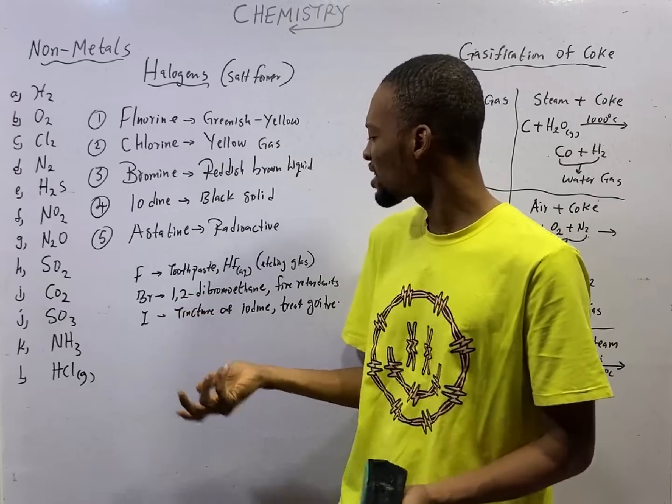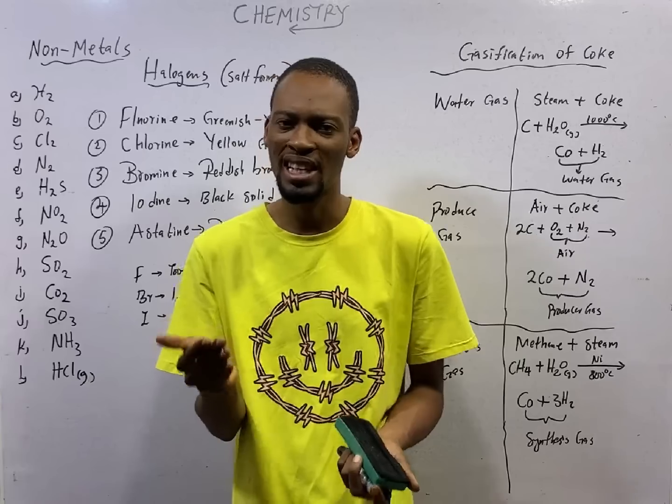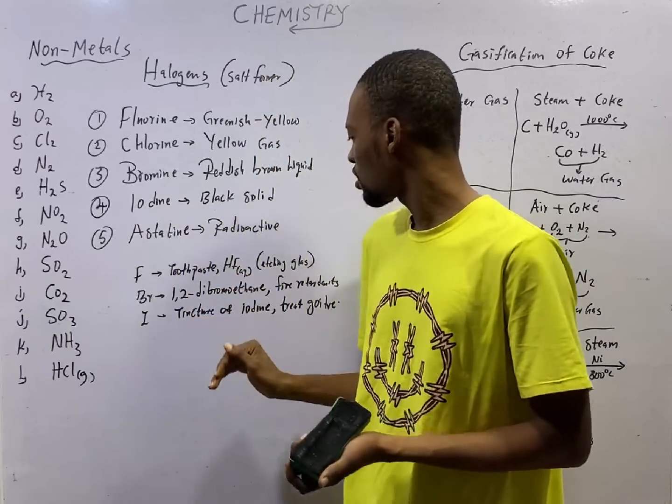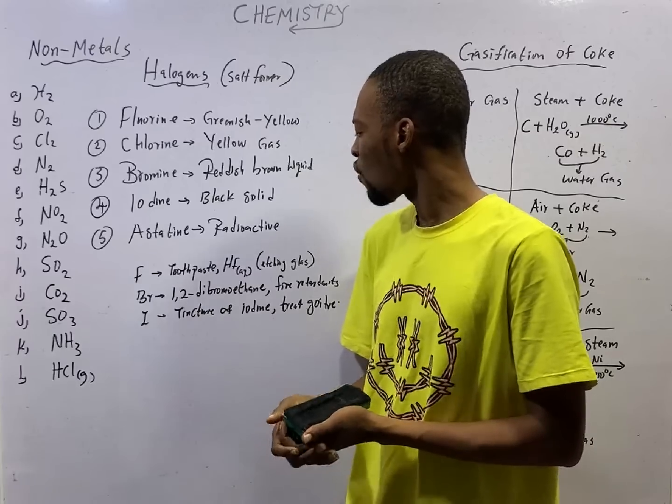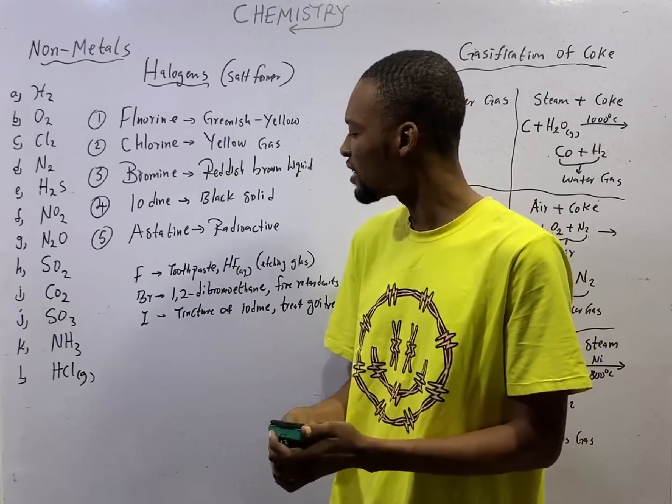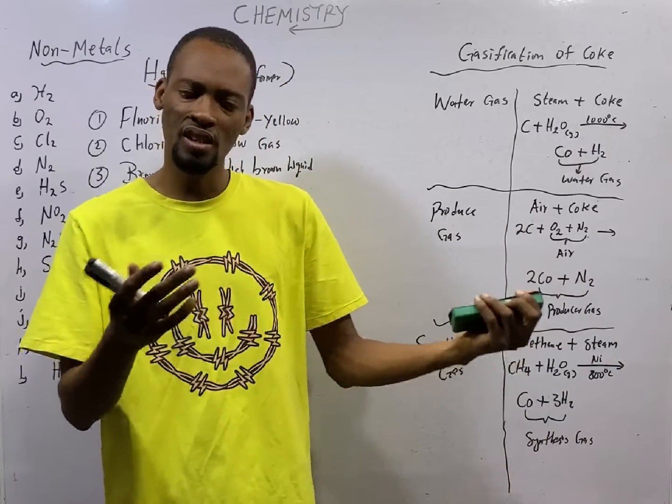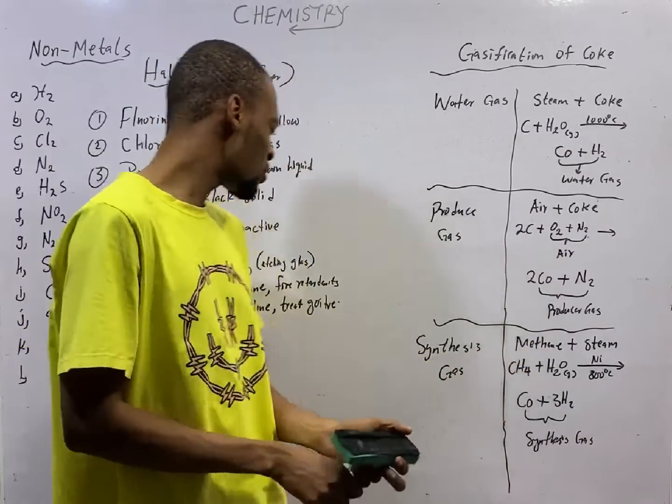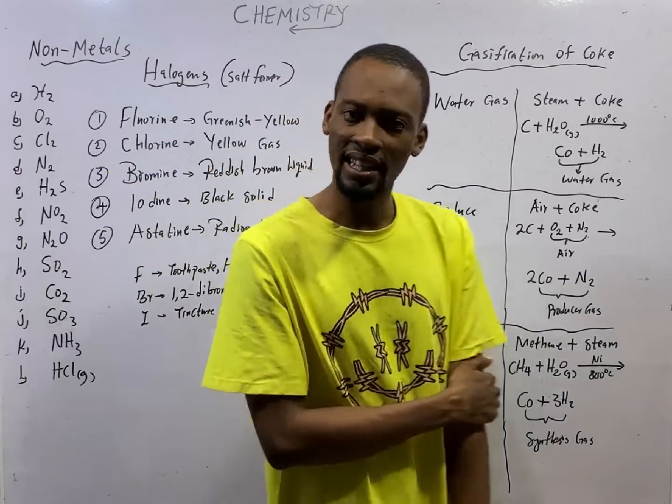Fluorine is used in making toothpaste, and it is used in making hydrofluoric acid, which is an etching gas used for etching glass. Bromine is used to make 1,2-dibromoethane. This is used in petrol rating to increase the quality of fuel. 1,2-dibromoethane replaced tetraethyl lead.